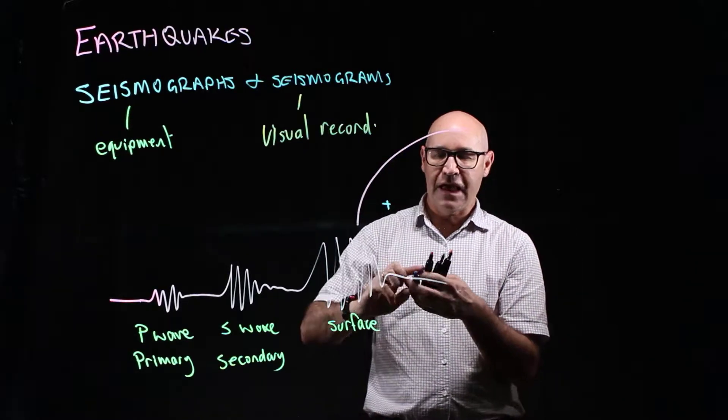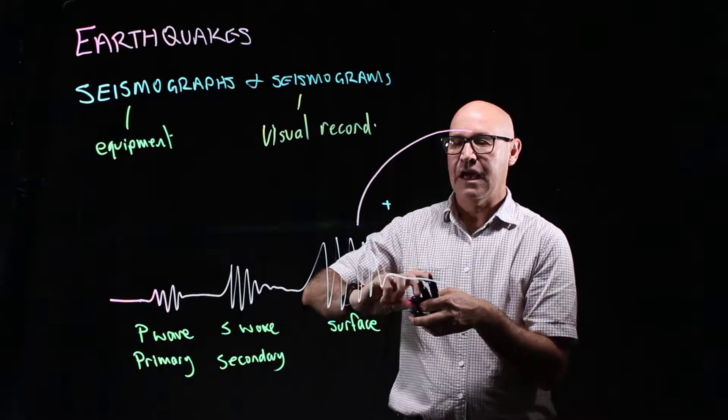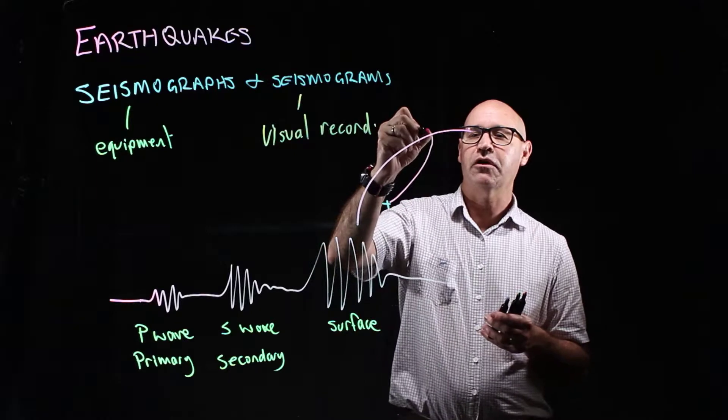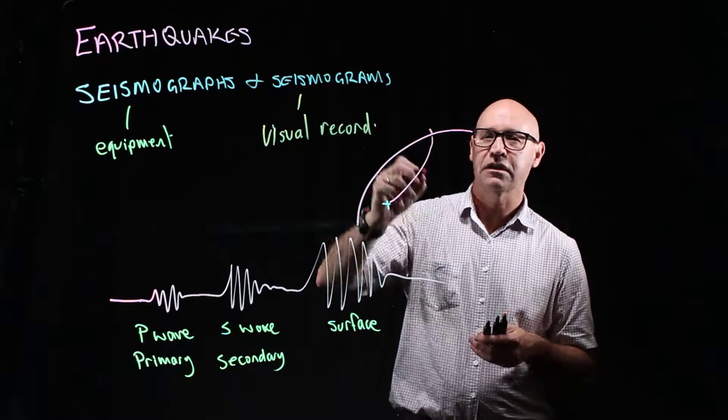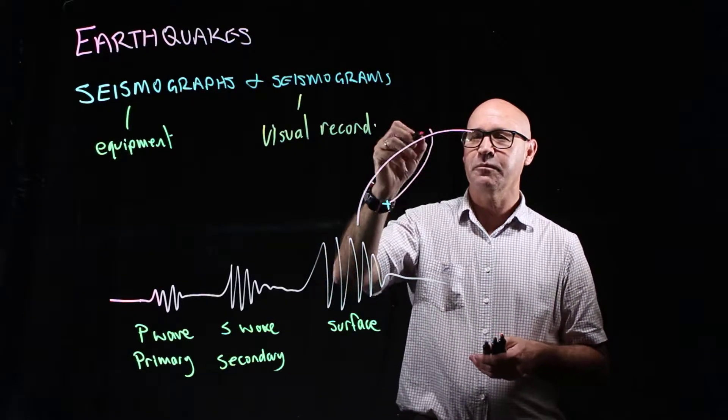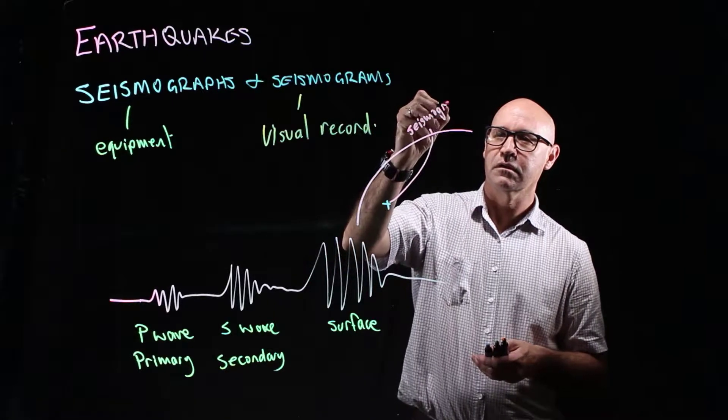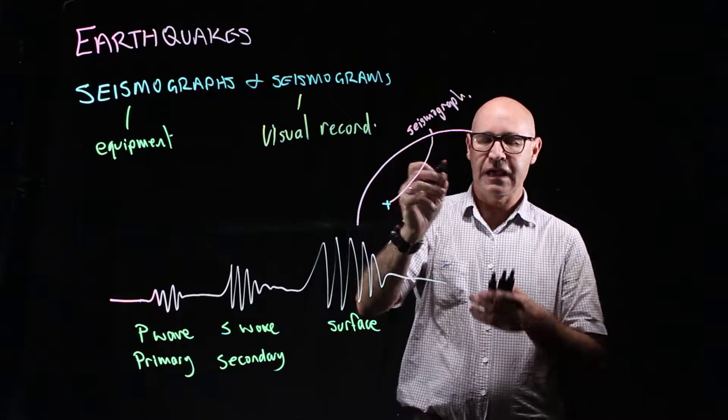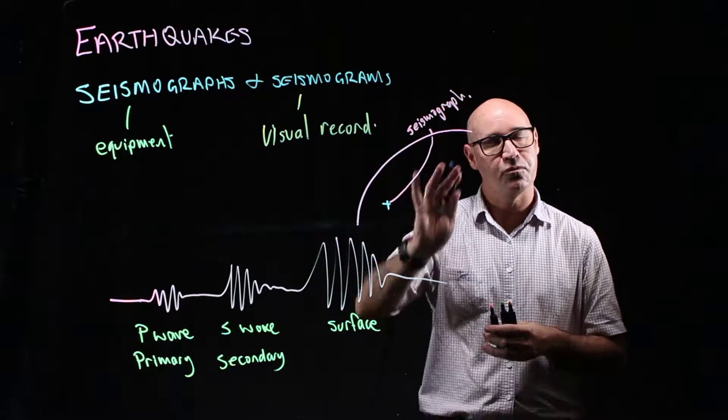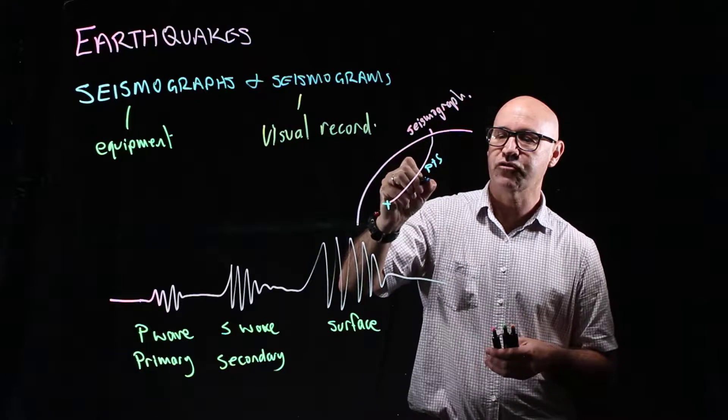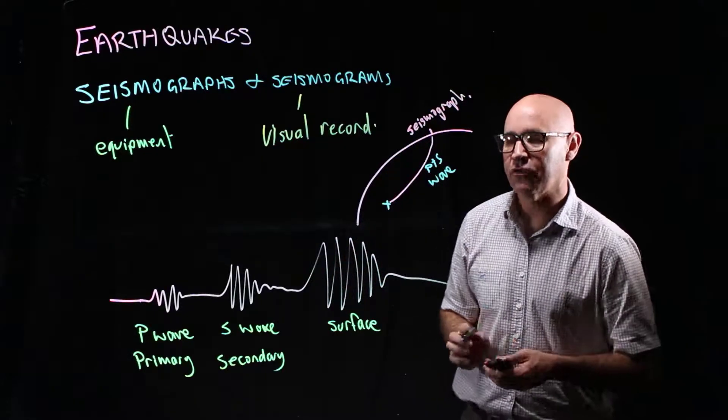So the S and the P waves actually go through the Earth to the seismic station where they're detected. So this is where we've got our seismograph. So the S and the P waves travel through the Earth's crust.